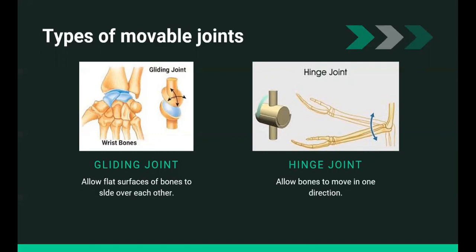Lastly, we have the hinge joint, which allows bones to move in one direction. These joints are found in the knees, elbows, fingers, and toes.